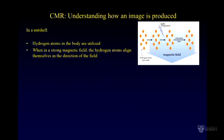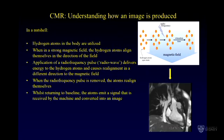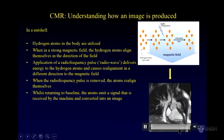So firstly, in a nutshell, how do we make images on CMR? Essentially, CMR uses a magnet and hydrogen atoms in the body. When the body is put into a magnetic field, the hydrogen atoms initially align themselves in the direction of the magnet. When a radiofrequency pulse is applied, the atoms then reorientate to a different direction. And when the radiofrequency pulse is removed, the atoms recover and realign themselves back to the initial direction, emitting a signal that is collected by the machine and converted into an image.